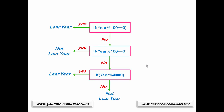Let us see some examples. First, we check if 2000 is a leap year or not. We check the condition: 2000 is completely divisible by 400 — yes. So 2000 is a leap year. Let us check another year, 1700. First we check: 1700 is completely divisible by 400 — no. So control moves to the next check: 1700 is completely divisible by 100 — yes. So 1700 is not a leap year.